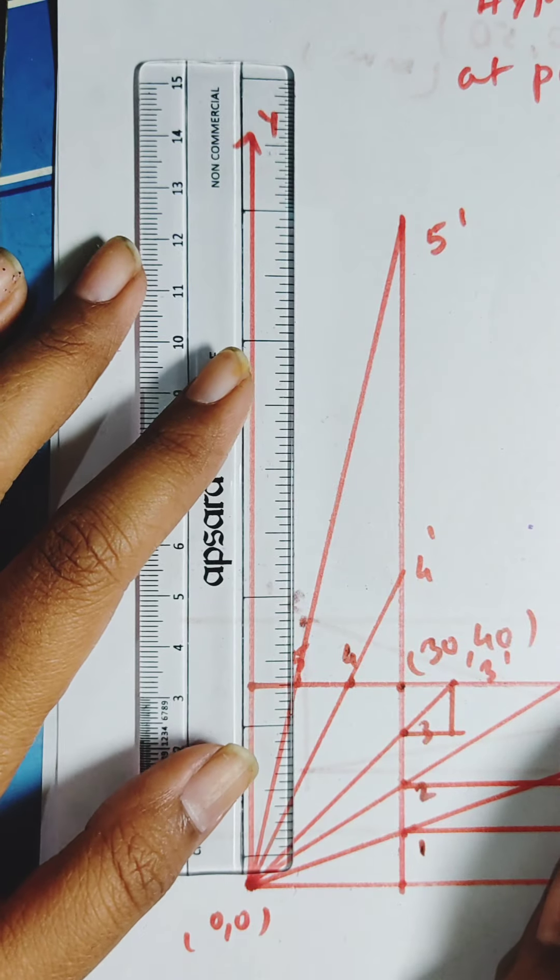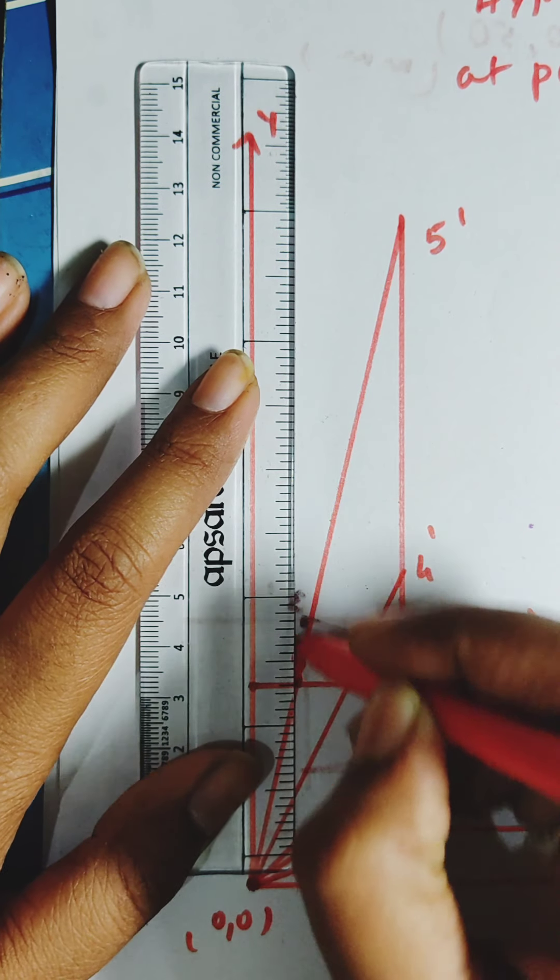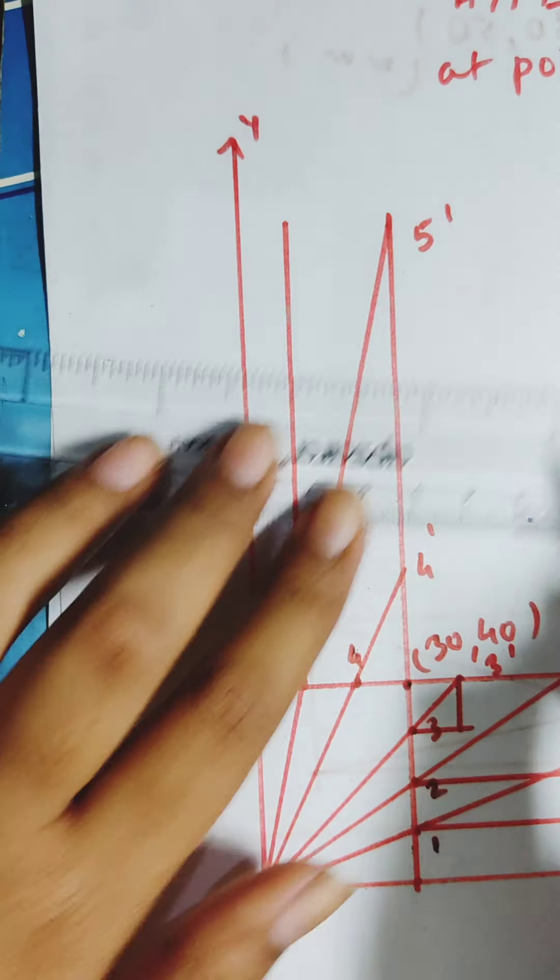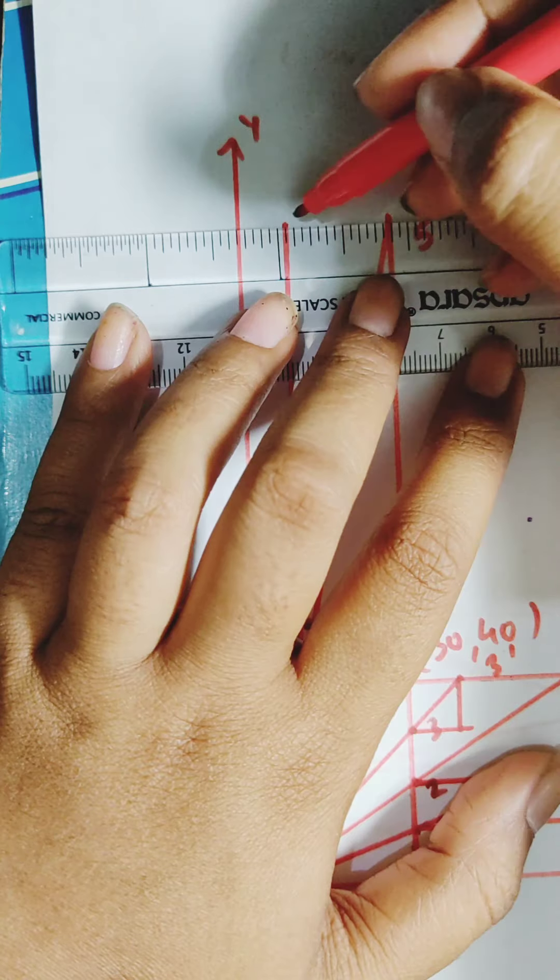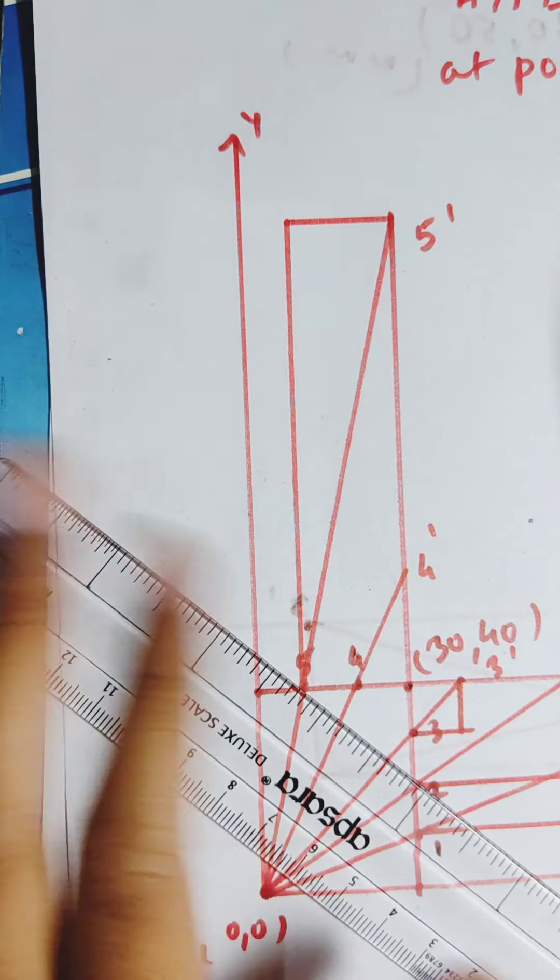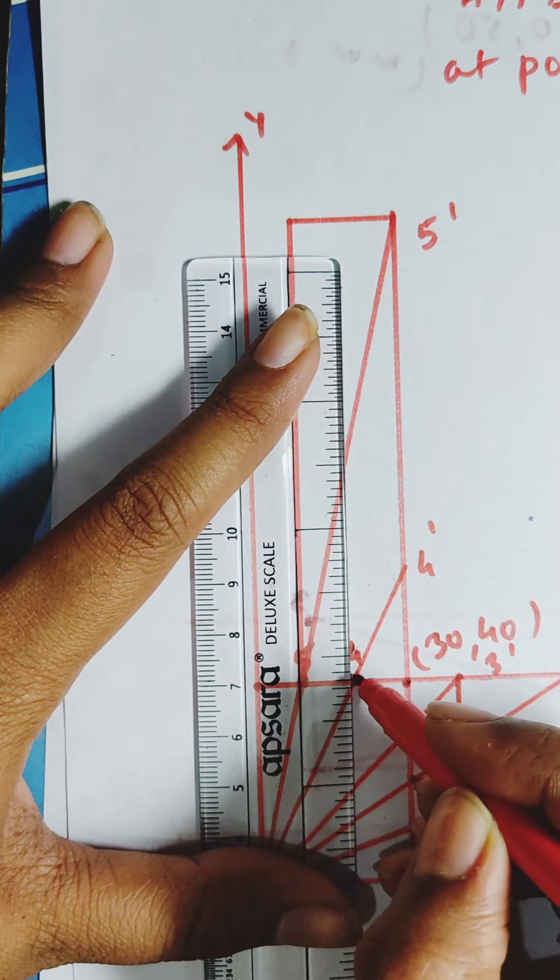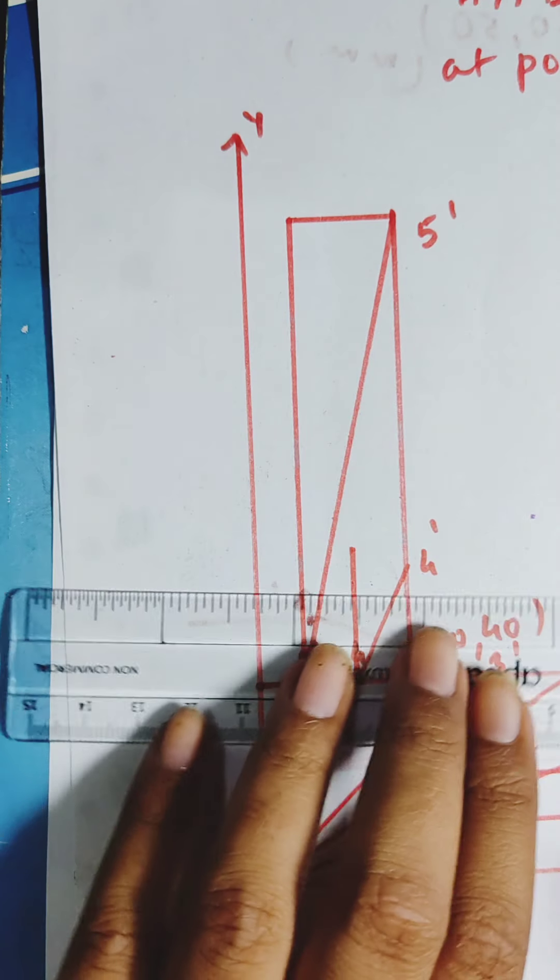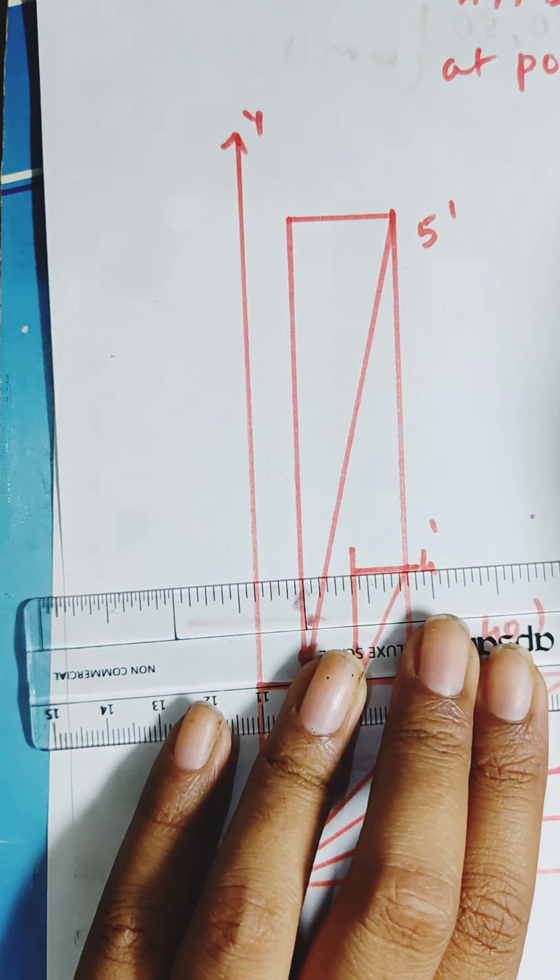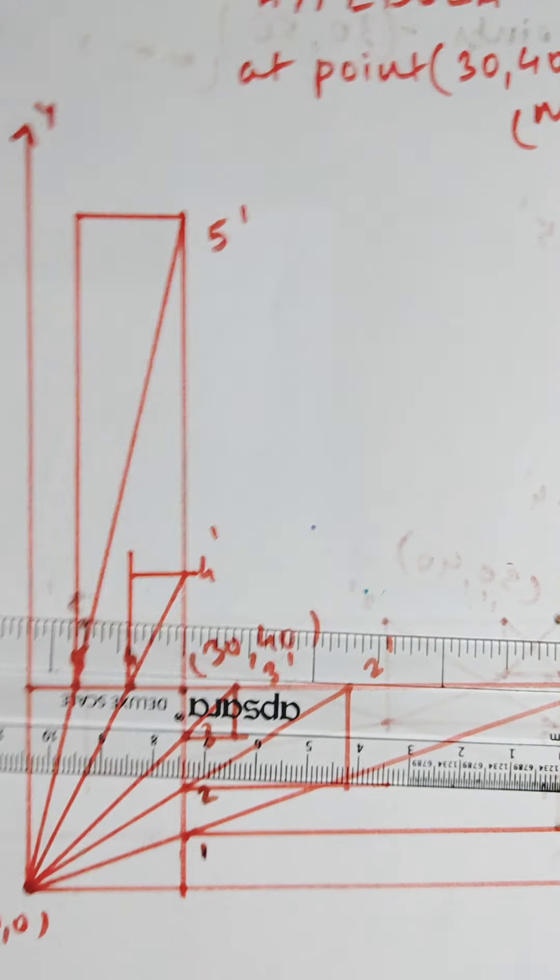Same goes for this part also. I have to draw this. Here. And then horizontal line. And this part to be horizontal.